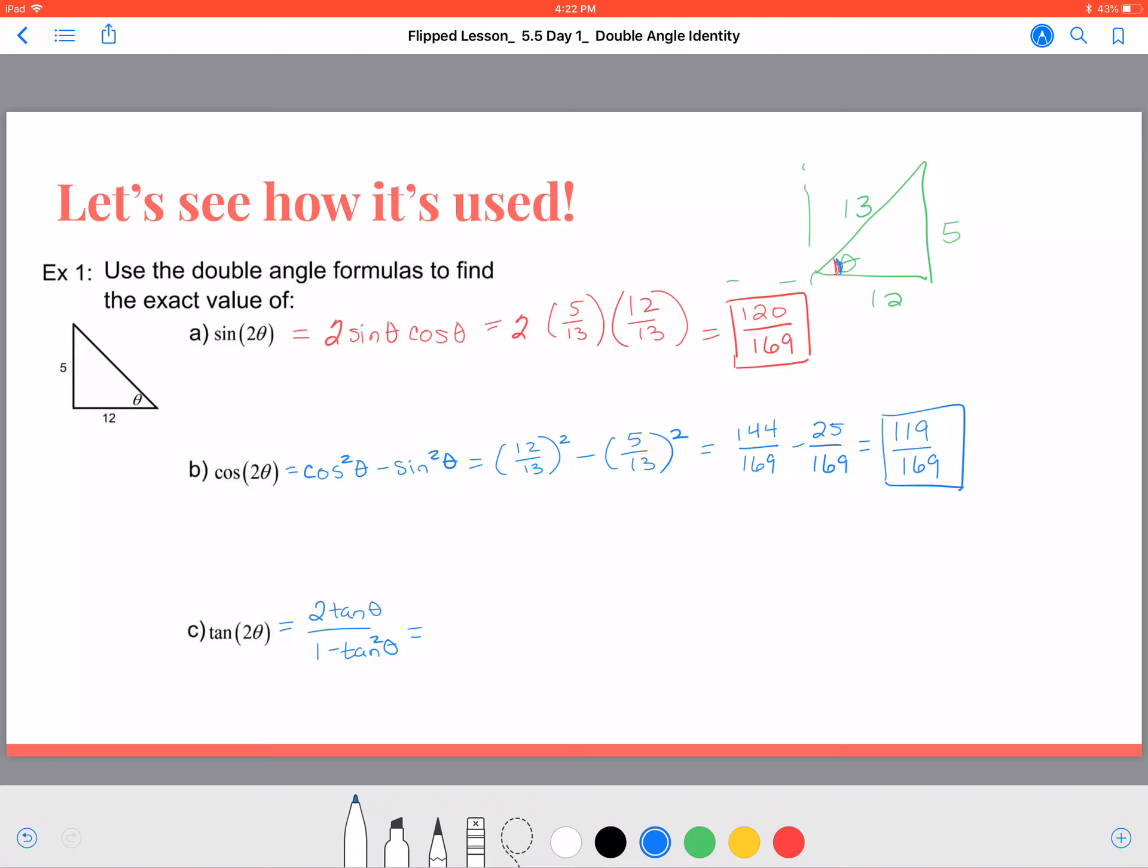The tangent of this image over here is 5 over 12, so 2 times 5 over 12 divided by 1 minus 5 over 12 squared. 2 times 5 over 12 is 5 over 6.